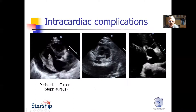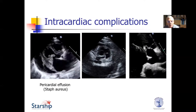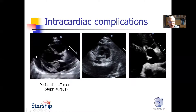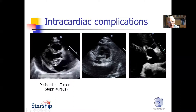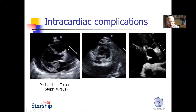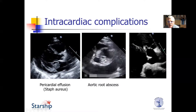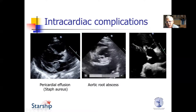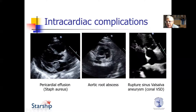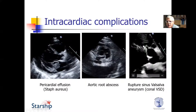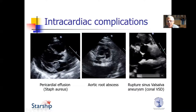Intracardiac complications of bacterial endocarditis are quite common. Pericardial effusions can be seen in rheumatic fever and the other arthropathies. But in this patient with bacterial endocarditis with staph aureus on the mitral valve, there was also infection in the pericardium. This is an aortic root abscess — the aortic valve is here and this is the abscess — it's pretty pathognomonic of bacterial endocarditis. And this patient has a conal ventricular septal defect with endocarditis on the VSD and the aortic valve, with rupture of a sinus of Valsalva aneurysm.